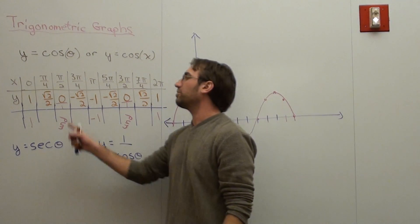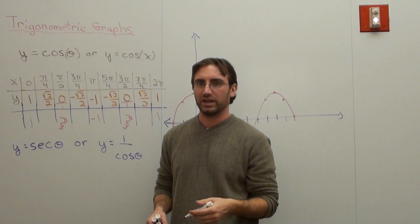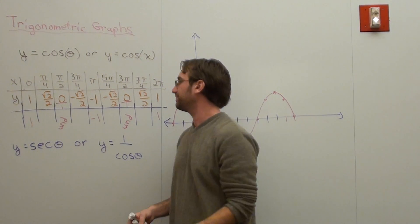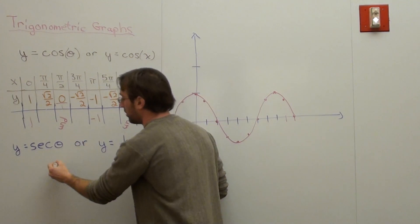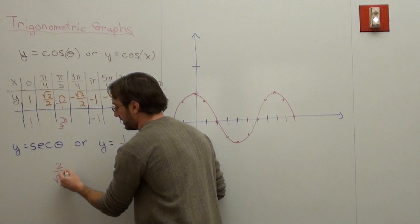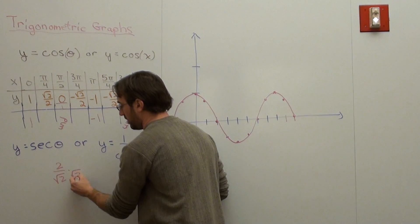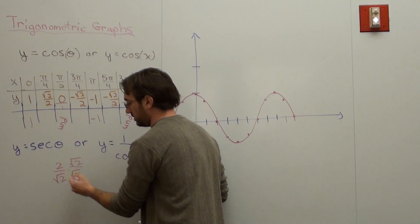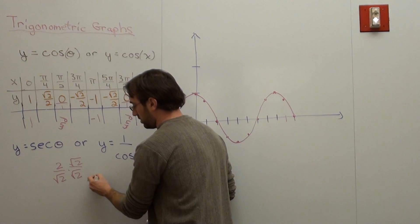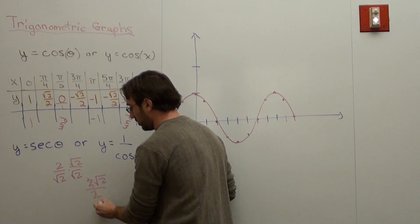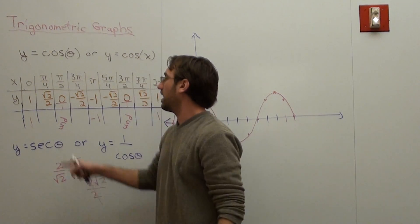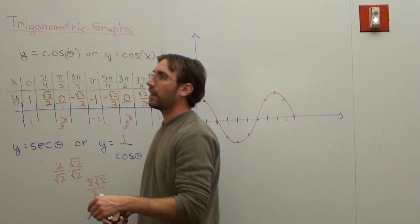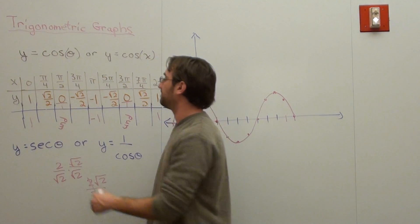When I flip the root 2 over 2 values, I already went ahead and did it. You get 2 over root 2. Rationalize the denominator — make sure that there's no radical. Those cross out, and for each of these you're going to get a root 2, which comes out to about 1.414.